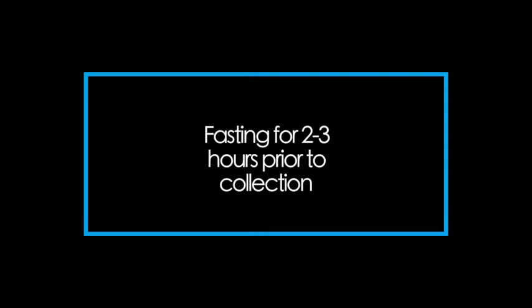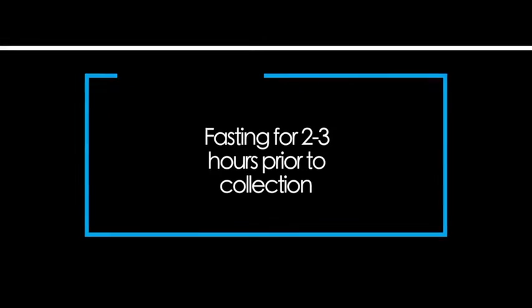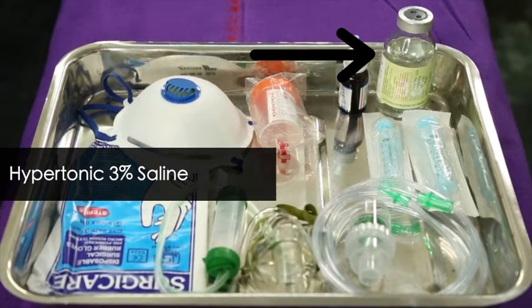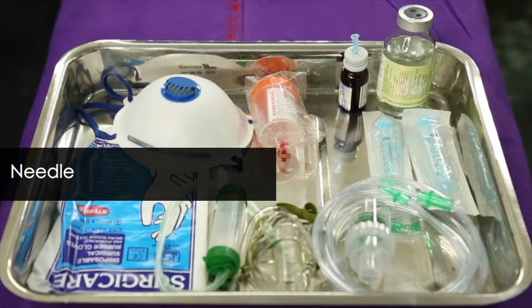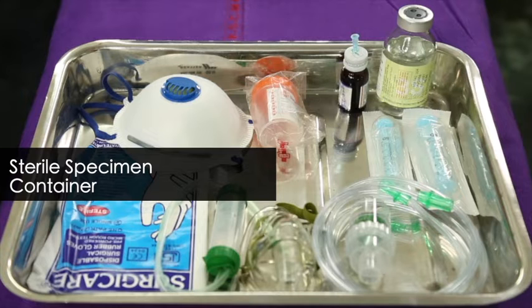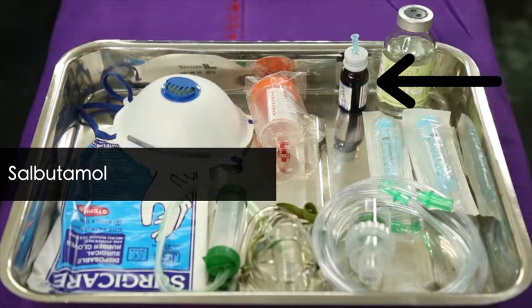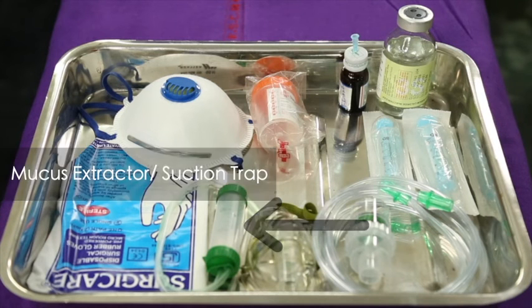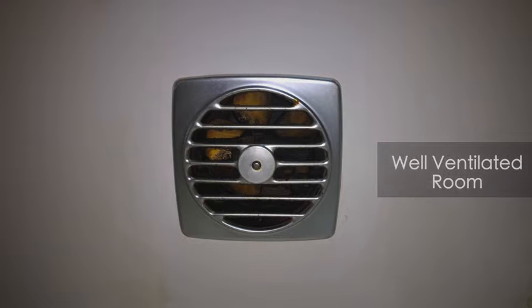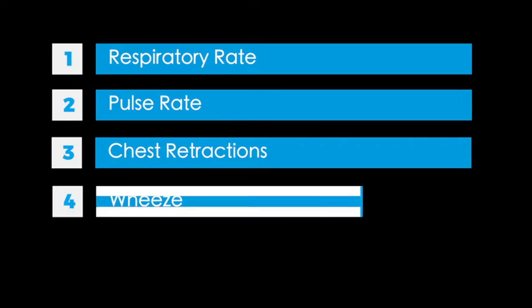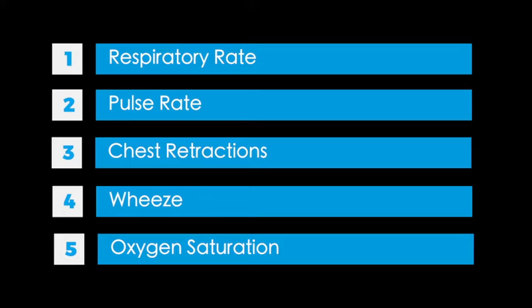The patient should be fasting for two to three hours prior to collection. Instruments required include disposable gloves, 3% hypertonic saline, a 10 ml syringe, needle, adhesive tape, sterile specimen container, sterile gauze, cotton, nebulization chamber with oxygen tubing and mask, salbutamol, and a mucus extractor or suction trap. The procedure should be performed in a well-ventilated room with an exhaust fan while wearing an N95 face mask. Baseline respiratory rate, pulse rate, chest retractions, and oxygen saturation should be recorded prior to the procedure.